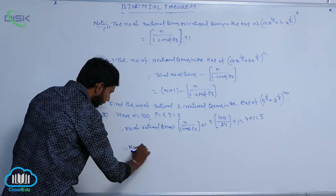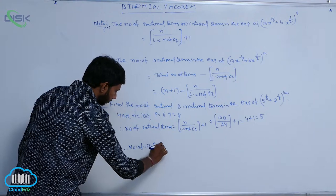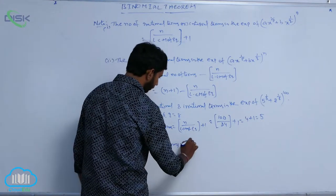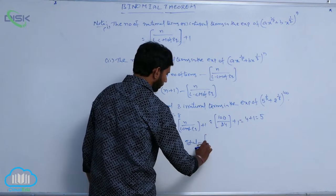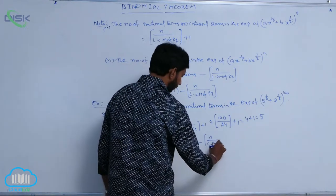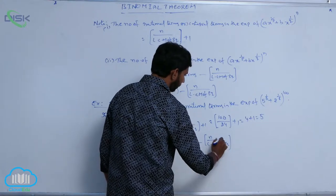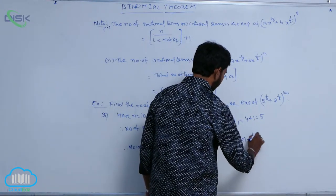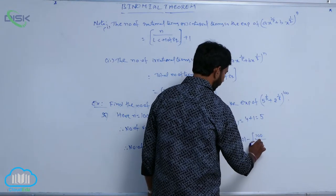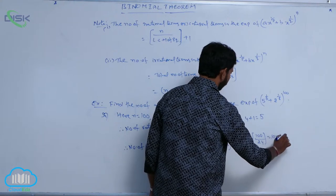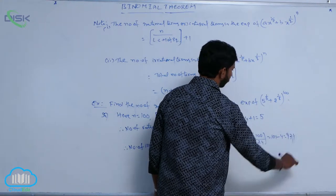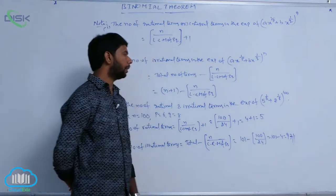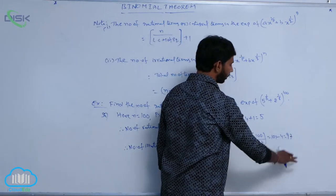The number of irrational terms = total terms − floor(n / lcm(p, q)). The total number of terms is n + 1 = 101. So, irrational terms = 101 − floor(100 / 24) = 101 − 4 = 97. Therefore, the number of rational terms is 5 and the number of irrational terms is 97.